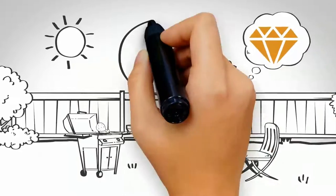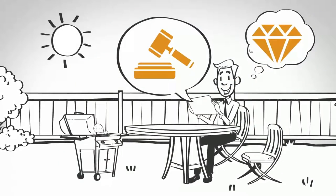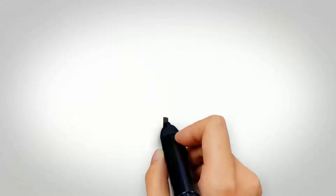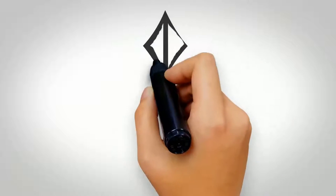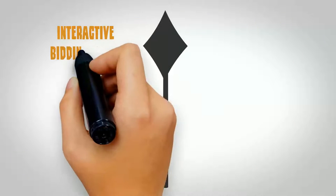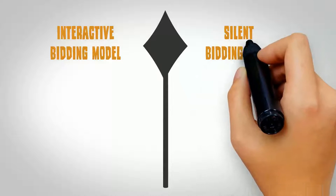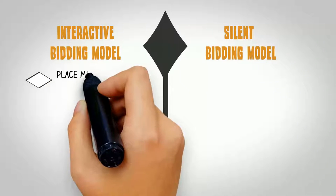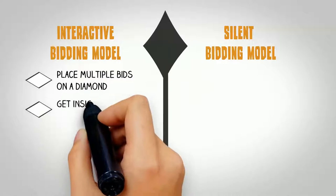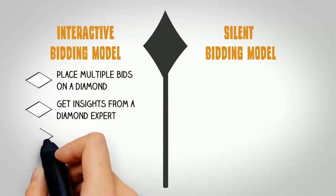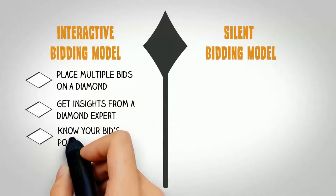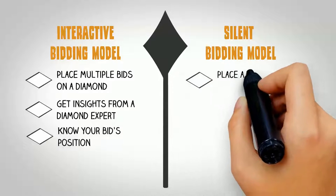This convenient and innovative diamond auction platform features two unique bidding models, which are interactive and silent. Included to make things easier for everyone, interactive auction allows users to place multiple bids on a diamond, get insights from a diamond expert, know your bid's position, while silent auction allows users to place a single bid on their preferred diamond.